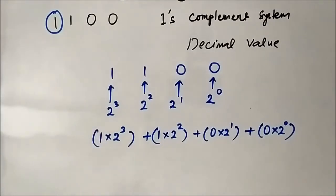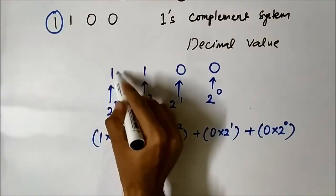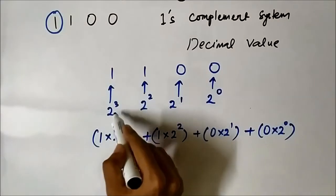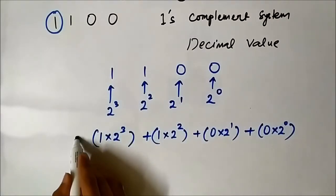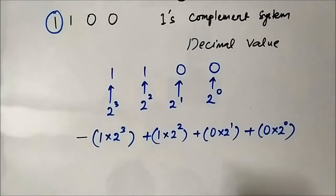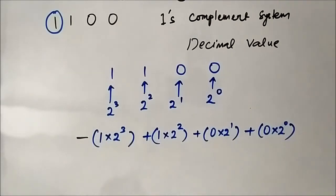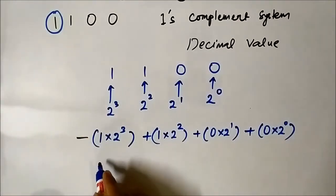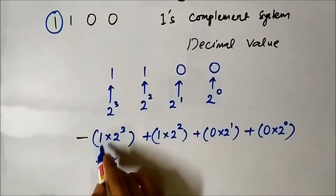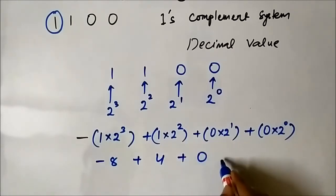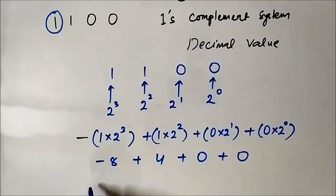Now we have to include an important step here. The MSB bit — the extreme bit on the left hand side — the weight value associated with it, which is 2 to the power 3, we will include a negative sign there. Now we will evaluate this expression: it will be minus 1 into 2³, which is minus 8, plus 4, plus 0, plus 0.